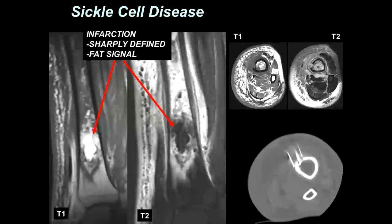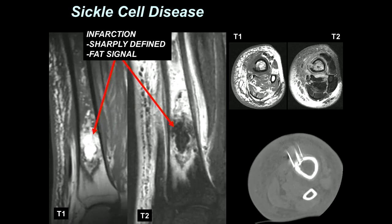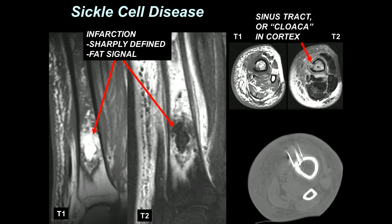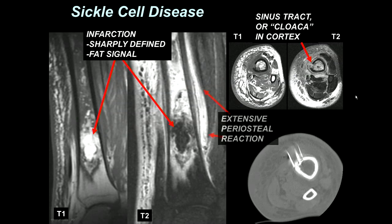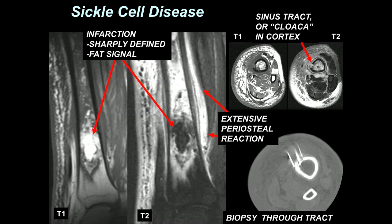There are other situations where you can get infarcted tissue. This is an example of a patient with sickle cell. Here we see the infarction sharply defined with fat signal in the center, and here we have an area of edema, massive periosteal reaction, and disruption of the anterior cortex of the tibia — what we call a cloaca. We biopsied through that area, and this ended up being infected bone with underlying infarction.